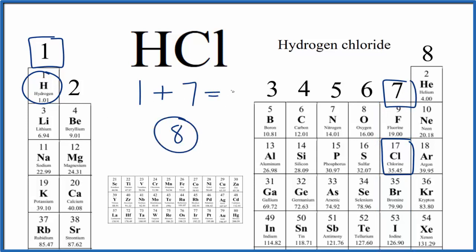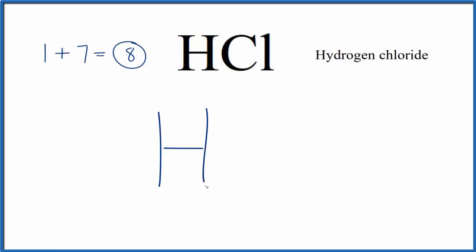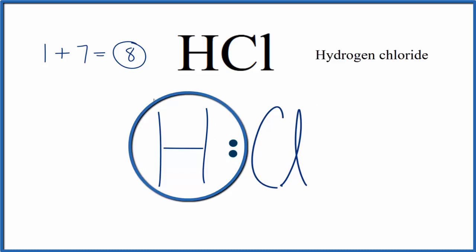So we have 8 total valence electrons for the HCl Lewis structure. So we write H, that's for the hydrogen, and then Cl, that's for the chlorine. We have 8 total valence electrons here. We'll put a pair of electrons between the hydrogen and the chlorine. That forms the chemical bond. And we've used 2 valence electrons. Hydrogen only needs 2 valence electrons to have its outer shell full. So we're done with the hydrogen.